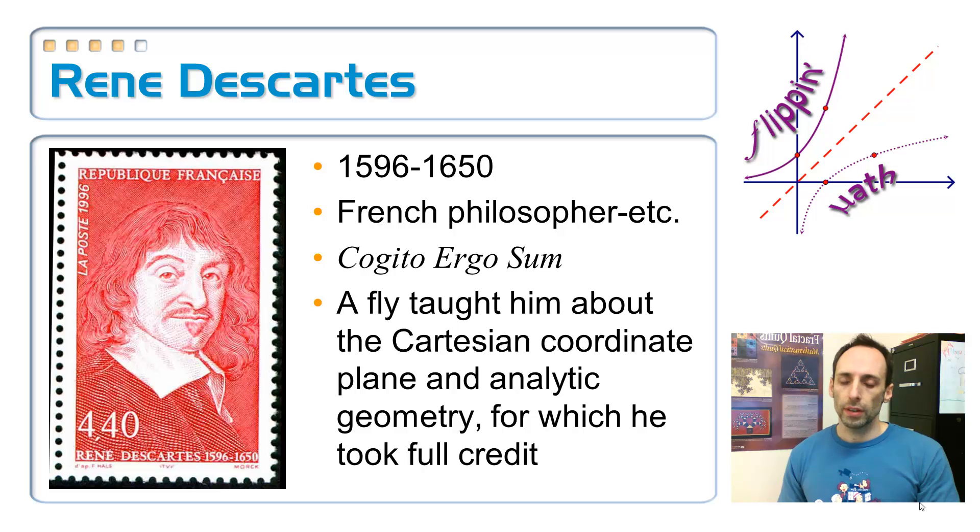And one of his most famous mottos or saying is, cogito ergo sum, which means, I think, therefore I am. So, if you've heard that before, that's the guy that comes from. And it says on here that a fly taught him the Cartesian coordinate plane, and he took complete credit for it. So, the Cartesian coordinate plane is what you are used to calling a piece of graph paper, or an x-y coordinate system that you draw a graph on. So, he made that thing up, and he's the one that's responsible for bringing geometry and algebra kind of together, laying the groundwork for calculus.